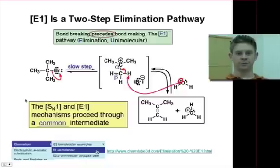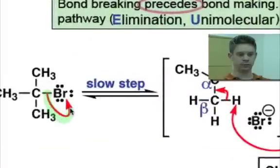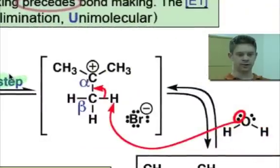The E1 elimination reaction is the subject of this webcast and is a two-step process involving first dissociation of the leaving group from the substrate, and this is the slow step of the process, followed by a deprotonation step, which is mediated typically by a base that's in solution.